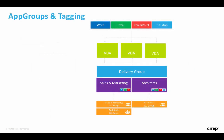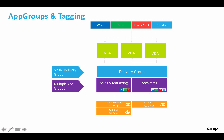With app groups and tagging, we can take a slightly different approach. We still need a delivery group, but in this case we can have just one delivery group. Then we have an app group — or app groups — that can be assigned to delivery groups. In this case we've got sales marketing and we've got architects. One of the key differences here is that the app group can query the delivery group for all available applications, but you can be specific as to which ones are available to each app group.